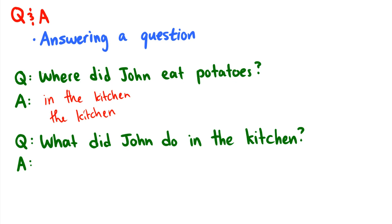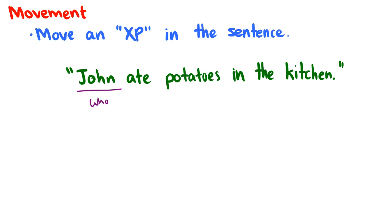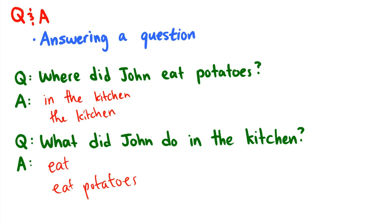If you say, 'What did John do in the kitchen?' you could say 'eat,' or you could say 'eat potatoes.' So 'eat' is a constituent and 'eat potatoes' is a constituent. The Q&A test is very reliable. You can also ask other questions: 'Who ate potatoes in the kitchen?' 'John ate what in the kitchen?' 'Where did John eat?' 'What did John eat?' You can respond with these constituent phrases, showing that these groups of words actually work together. That's the Q&A test.